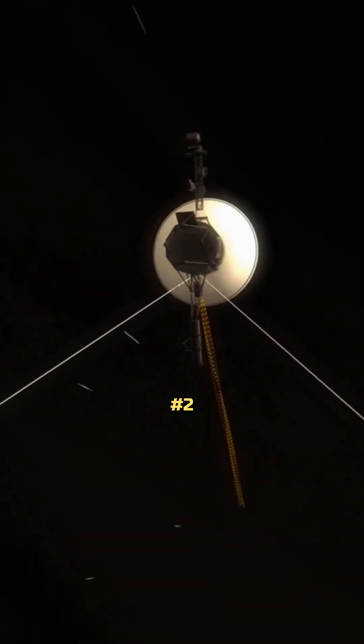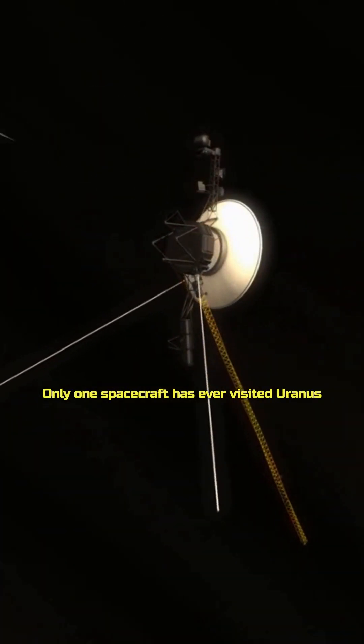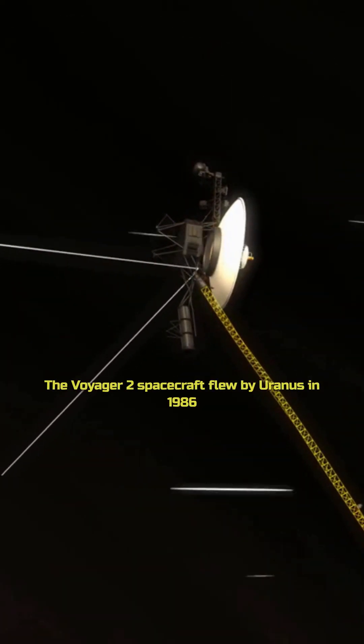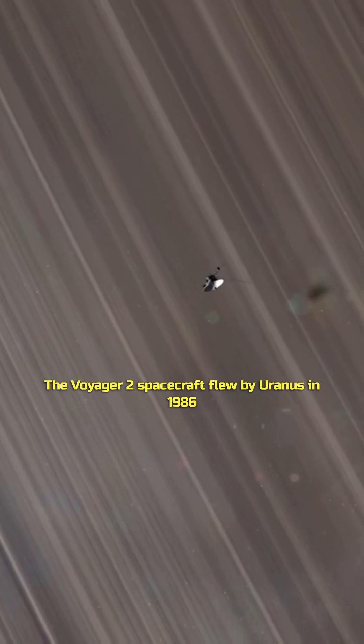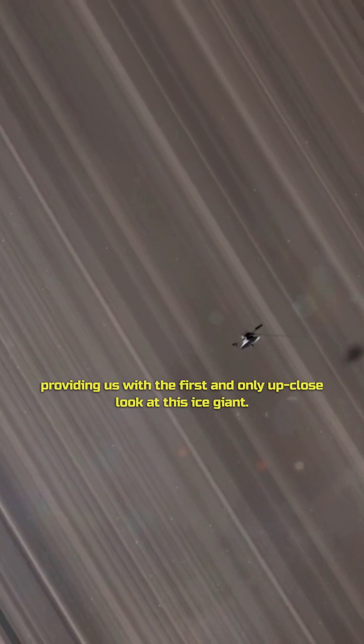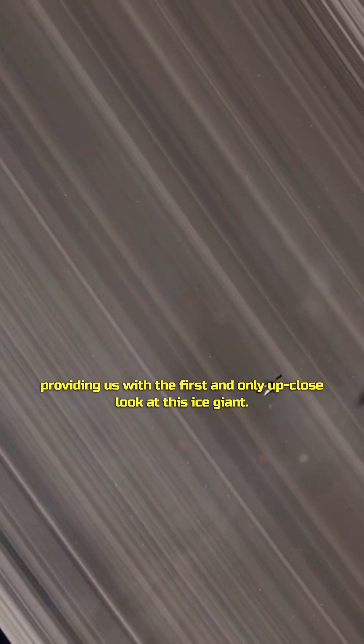Number 2. Only one spacecraft has ever visited Uranus. The Voyager 2 spacecraft flew by Uranus in 1986, providing us with the first and only up-close look at this ice giant.